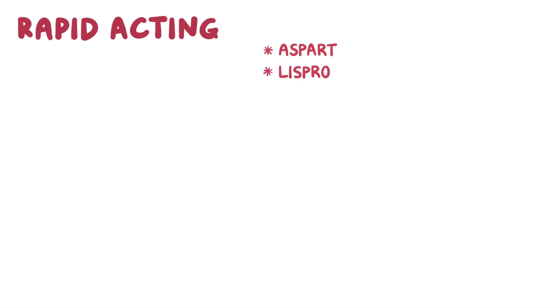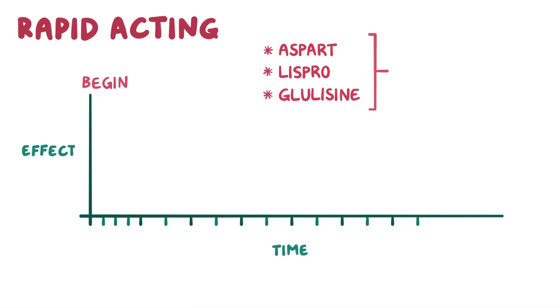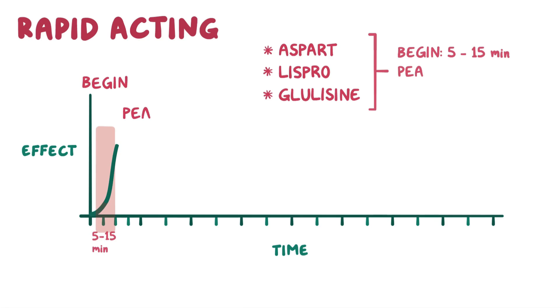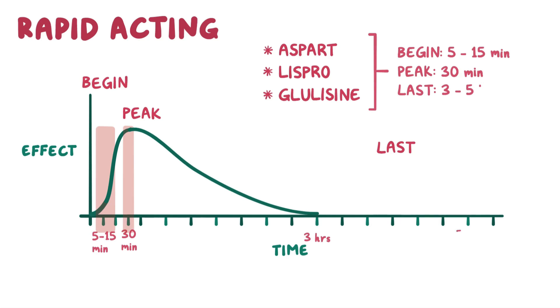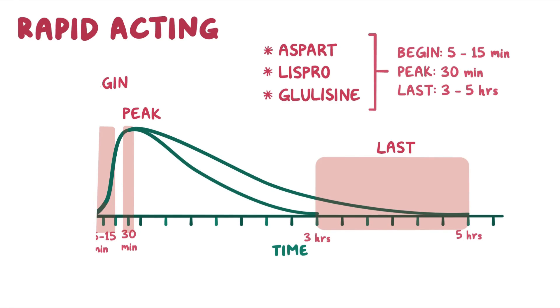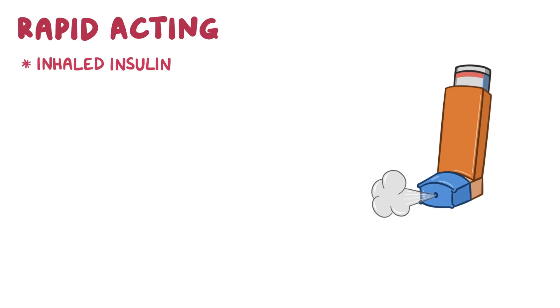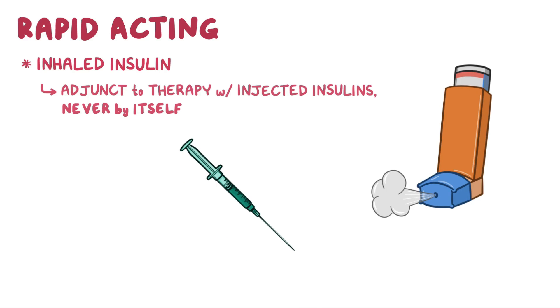Rapid-acting insulins include insulin aspart, lispro, and glulisine. These medications begin working within 5 to 15 minutes of administration, with a peak effect at 30 minutes, and may last for 3 to 5 hours. Another rapid-acting insulin is inhaled insulin, which can only be used as an adjunct to therapy with injected insulins and never by itself.